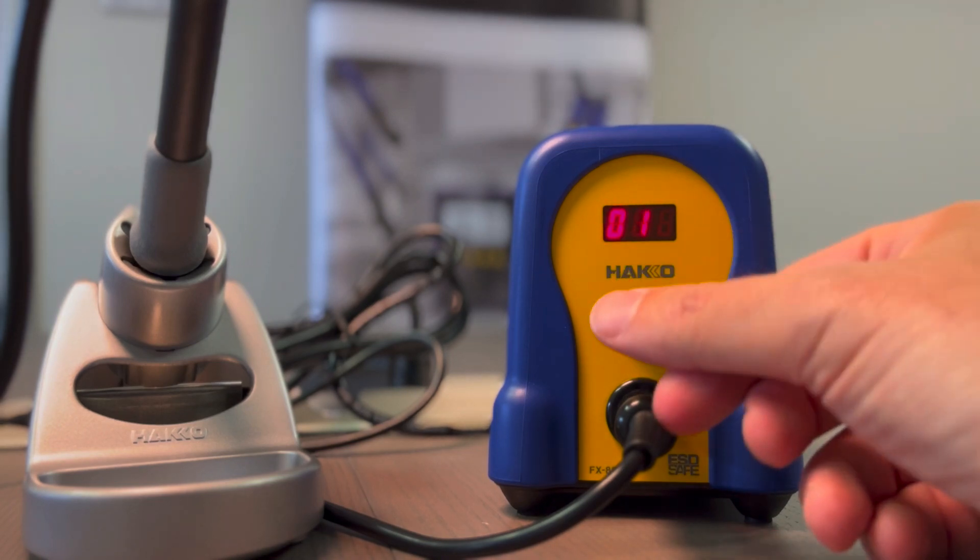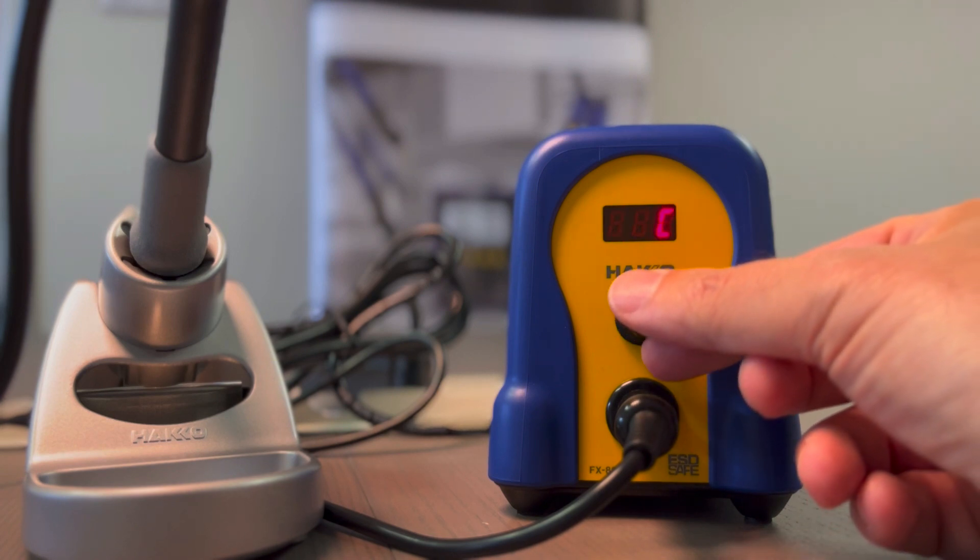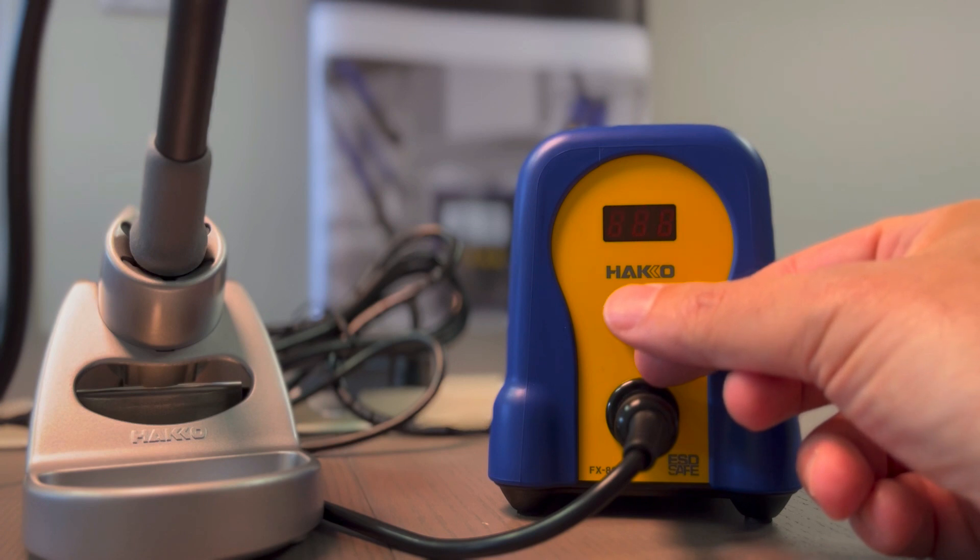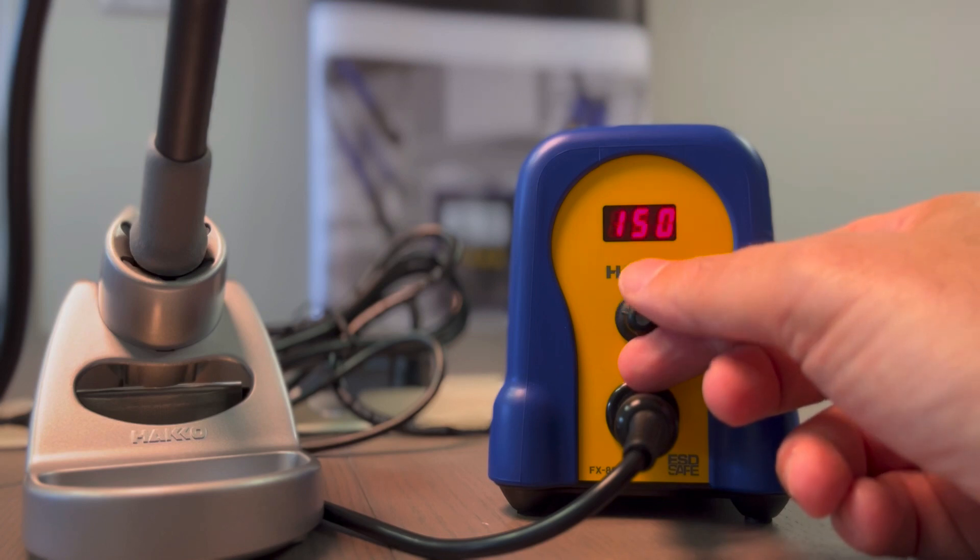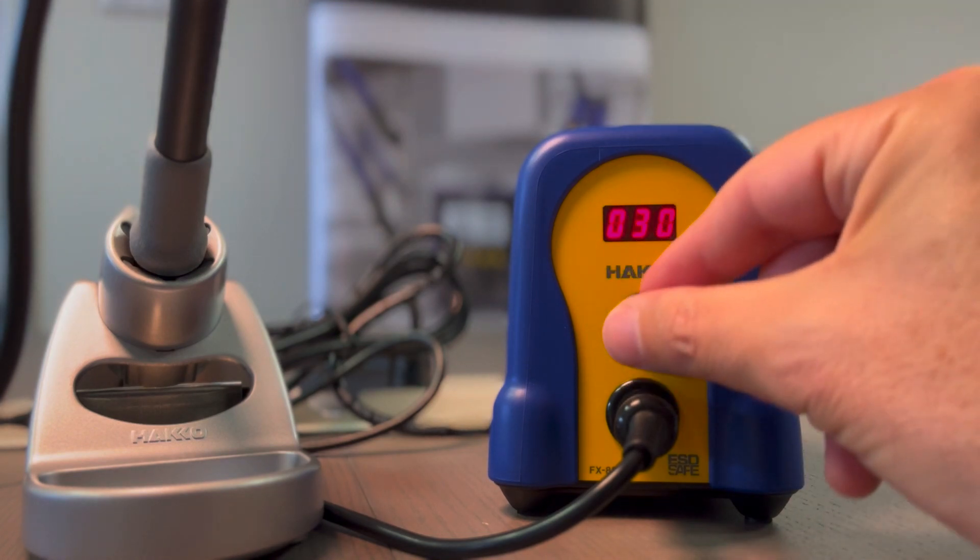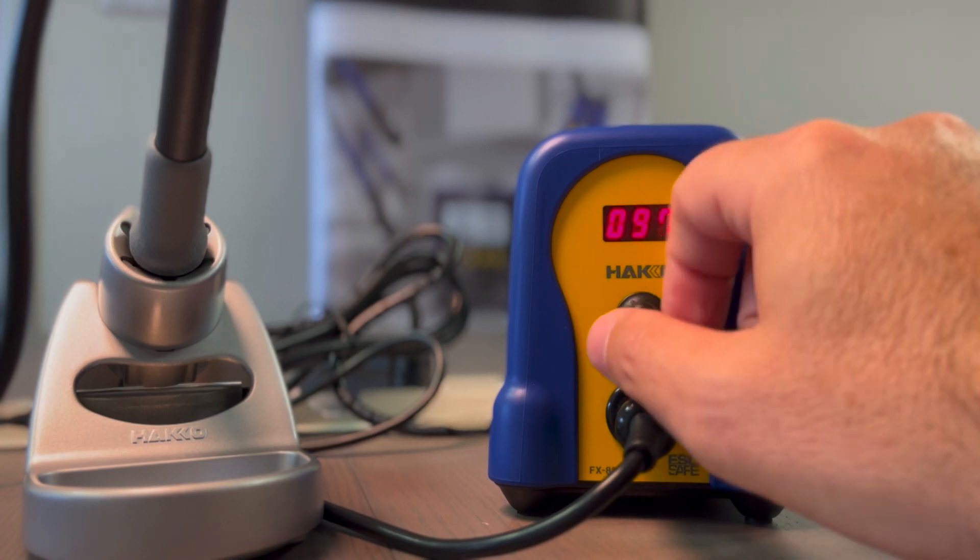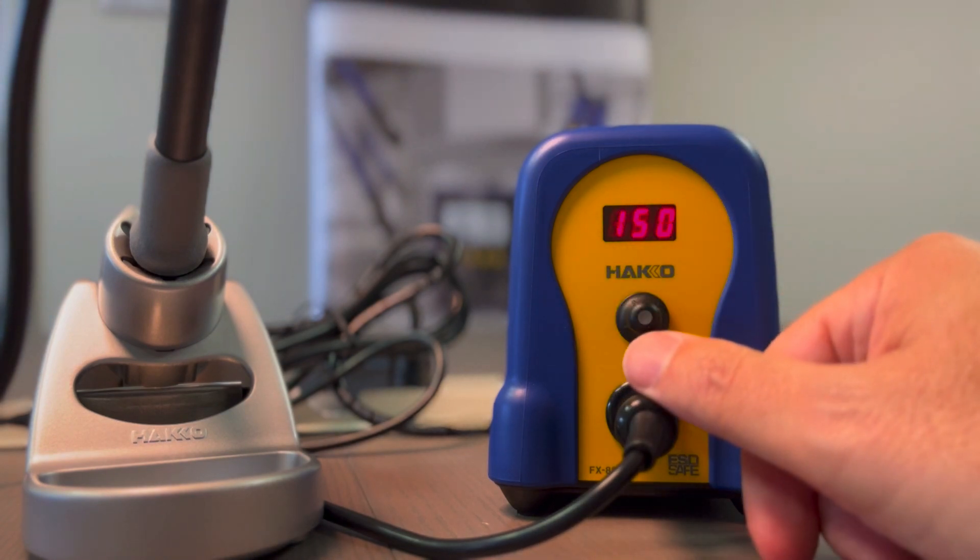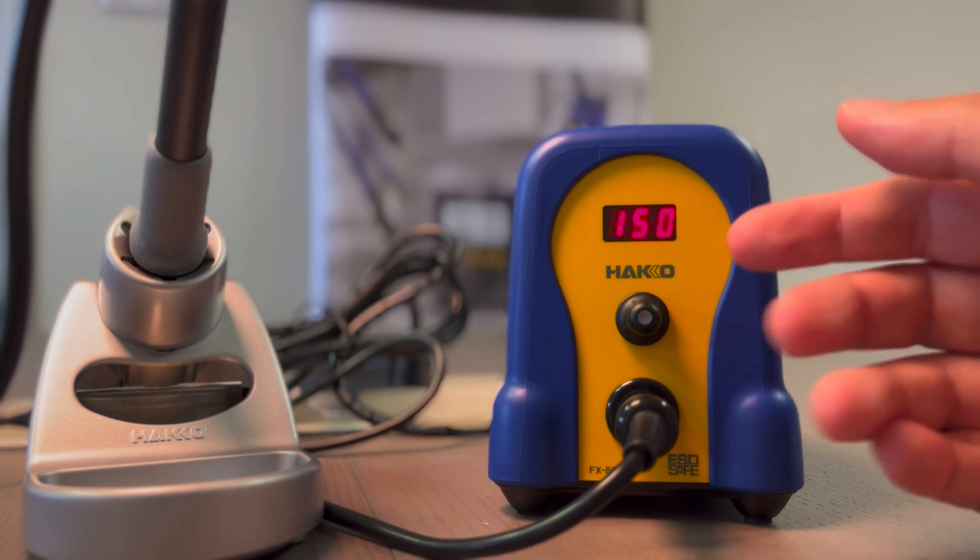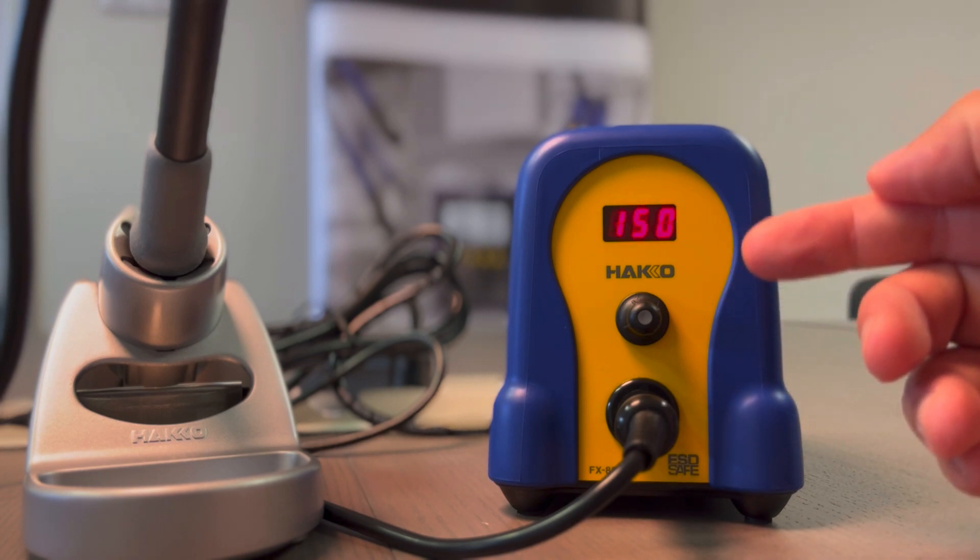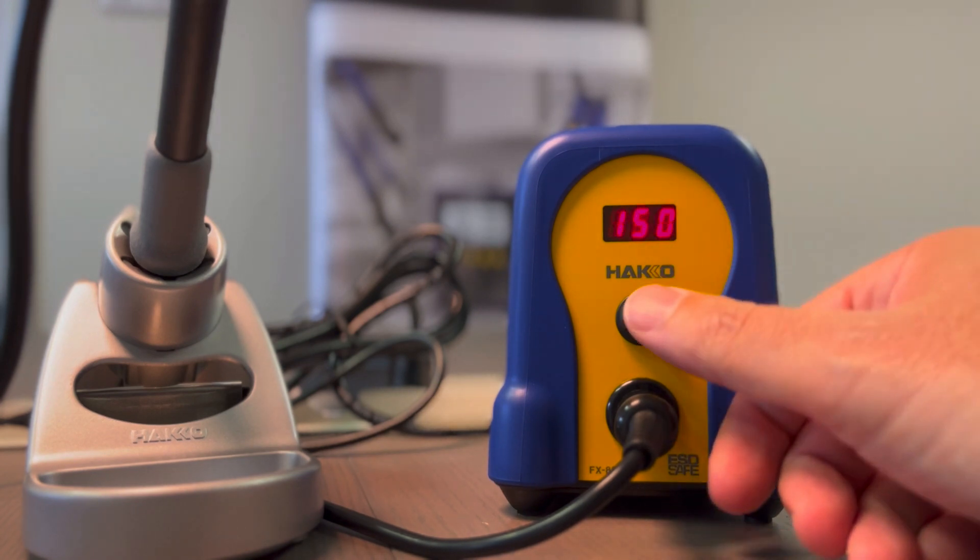We start with number one, which is about Celsius or Fahrenheit. Number three is about a low temperature alarm. It goes from 150 to 30 degrees, and this sets up an alarm which will make a sound when the soldering tip temperature goes below the temperature you have set.